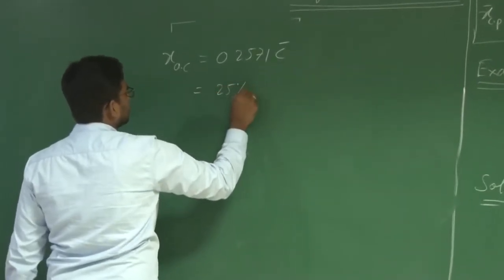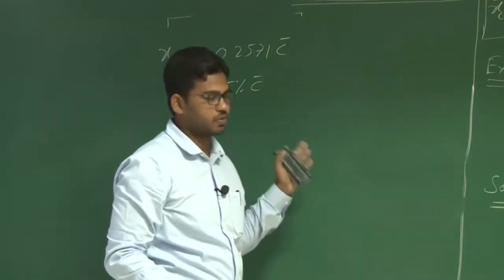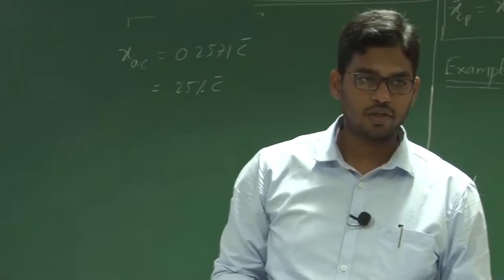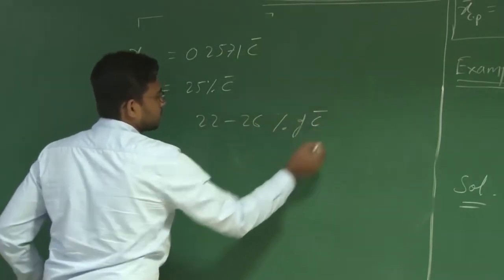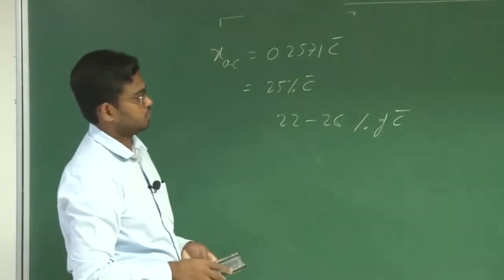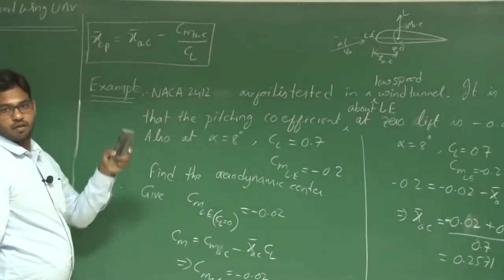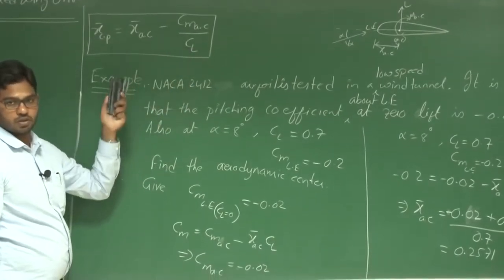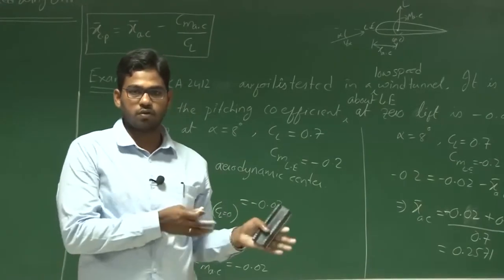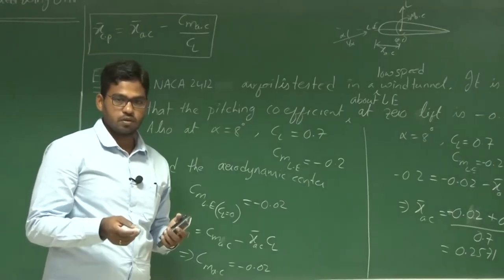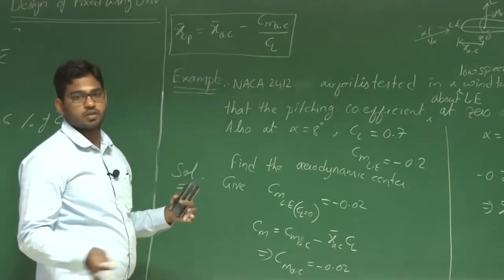x-bar_ac is a non-dimensional number, so x_ac equals 0.2571 c-bar, which is approximately 25 percent of c-bar — or about the quarter chord. For low-speed flight vehicles, the aerodynamic center generally lies at about 22 to 26 percent of the mean aerodynamic chord. It is also worth noting that the center of pressure keeps varying with angle of attack because C_l changes and the pressure distribution changes, giving a different centroid. By contrast, x_ac remains constant over a range of velocities and angles of attack.